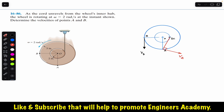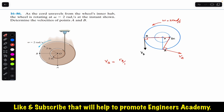Similarly, the velocity of B must be perpendicular to the line joining the instantaneous center and point B. Now we can find the velocity of B. We are given the omega of the disc, which is two radians per second. The velocity of B equals r of B from the instantaneous center times omega, where r_B,IC is the position vector from the instantaneous center to point B.